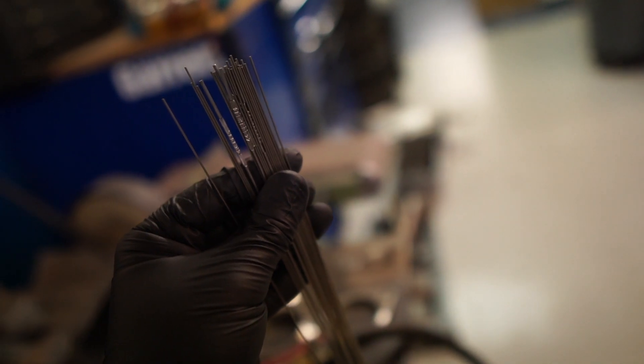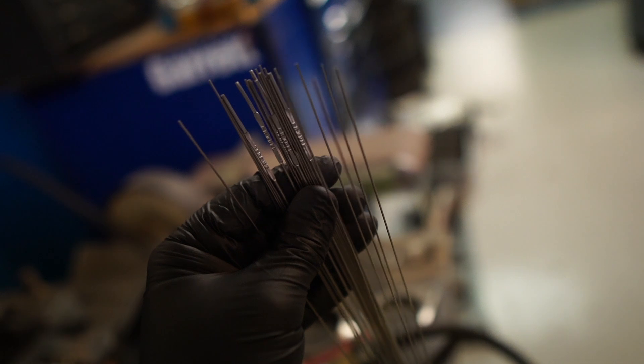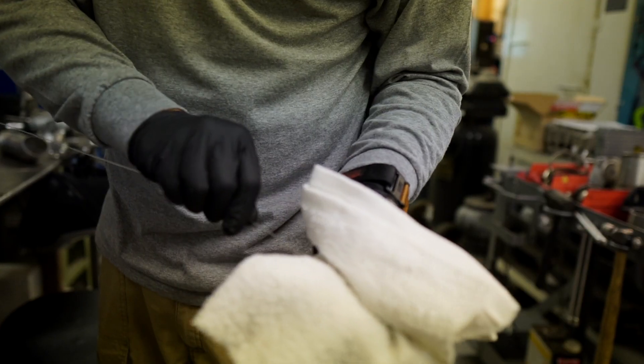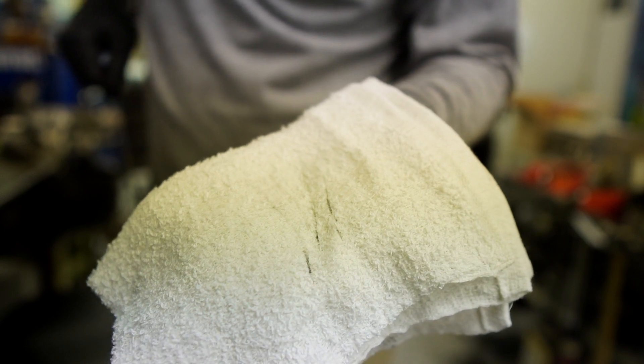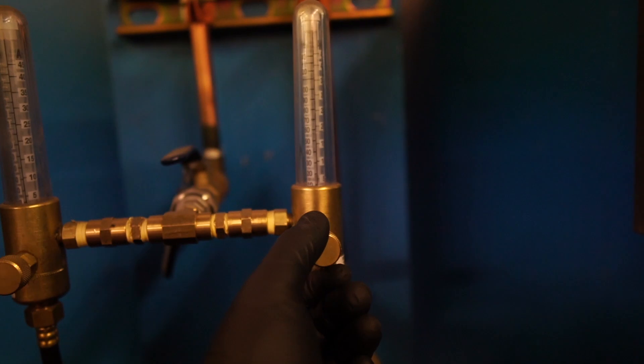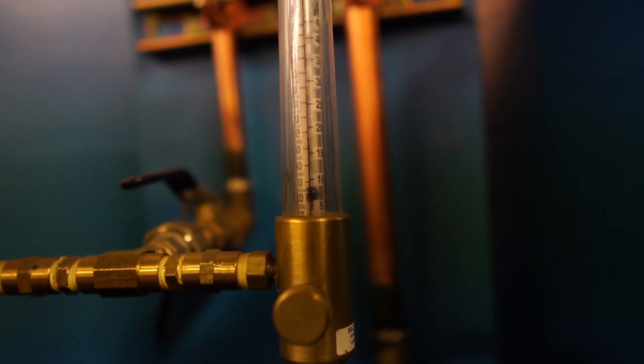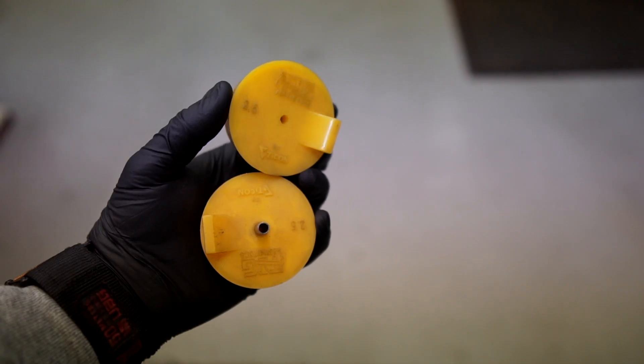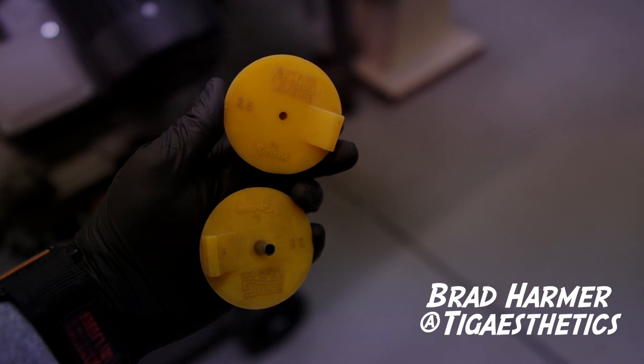If you're taking the time to prep your material to a high standard, then why would you want to dip unprepped dirty filler rod into a clean puddle? Acetone wipe your filler. It's never clean from the manufacturer and it will contaminate your weld. On this specific part we're going to be back purging about 7 to 10 CFH just depending, making sure we have a nice tight fit up with zero leaks. We'll be using these awesome silicone purge plugs from Brad Harmer at TIG Aesthetics to do the job.